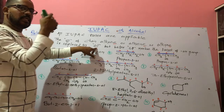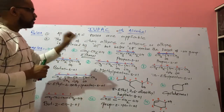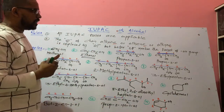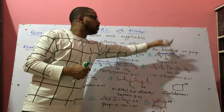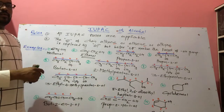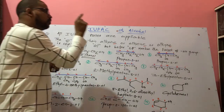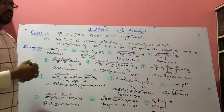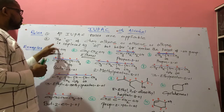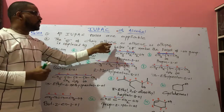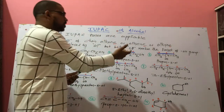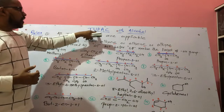The 'e' of the chain alkane or alkyne is replaced by 'ol'. But before 'ol' is mentioned, the location number is given. The location number indicates the position of the OH group. This is the specific rule of IUPAC for naming alcohols.